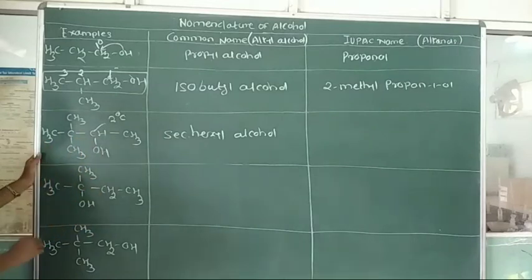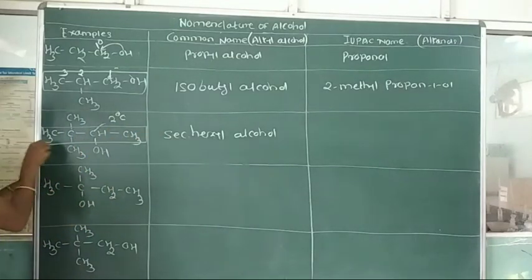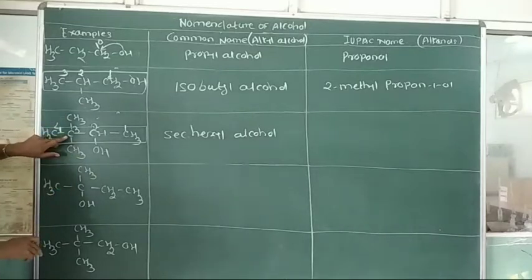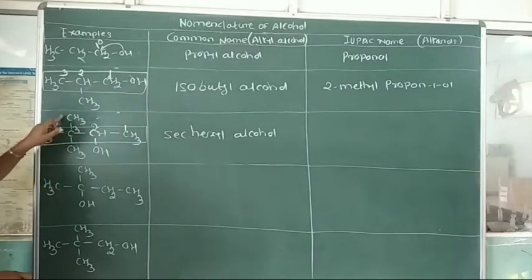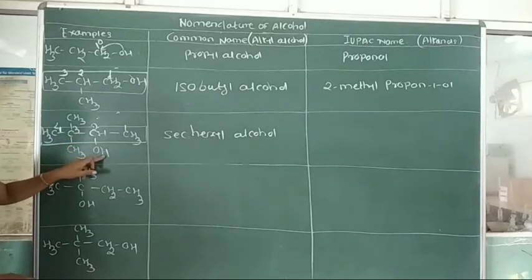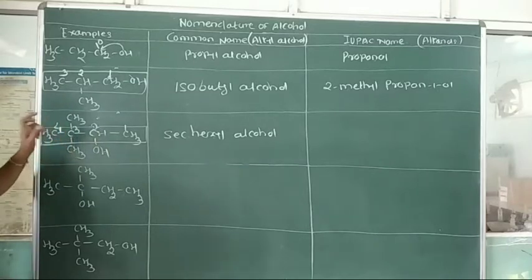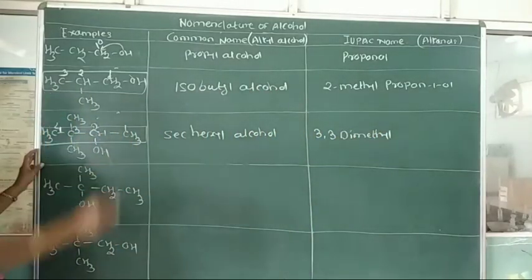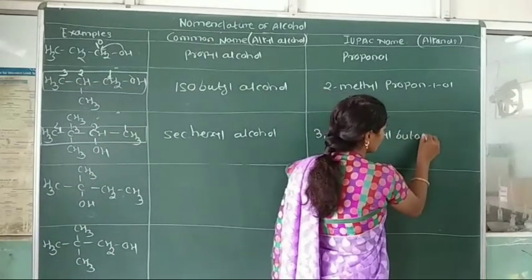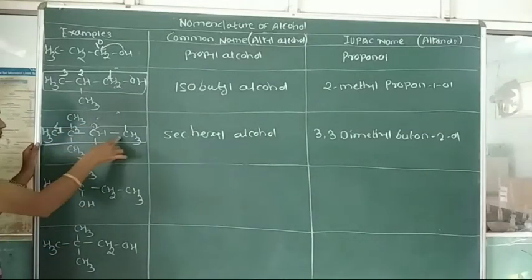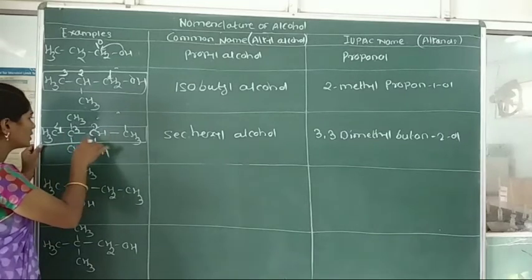In the IUPAC system, select the longest continuous chain and number it 1, 2, 3, 4. Two methyl groups are attached to the third carbon atom, and the hydroxy group is attached to the second carbon atom. Therefore we use the numbers 3,3-dimethyl. With 4 carbon atoms in the selected chain, the IUPAC name is 3,3-dimethylbutan-2-ol.